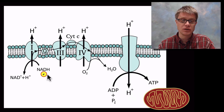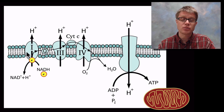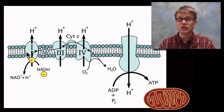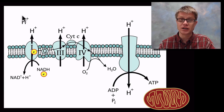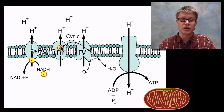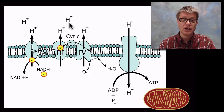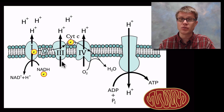What happens to those electrons? They're transferred to a protein, which uses the energy of those electrons to pump a proton — a hydrogen ion, a hydrogen atom that's lost one electron — to the outside of that membrane. As those electrons are transferred to another protein, we use the energy of that to pump another proton outside the membrane. Every time electrons pass through a protein, we pump a proton to the outside of that membrane.